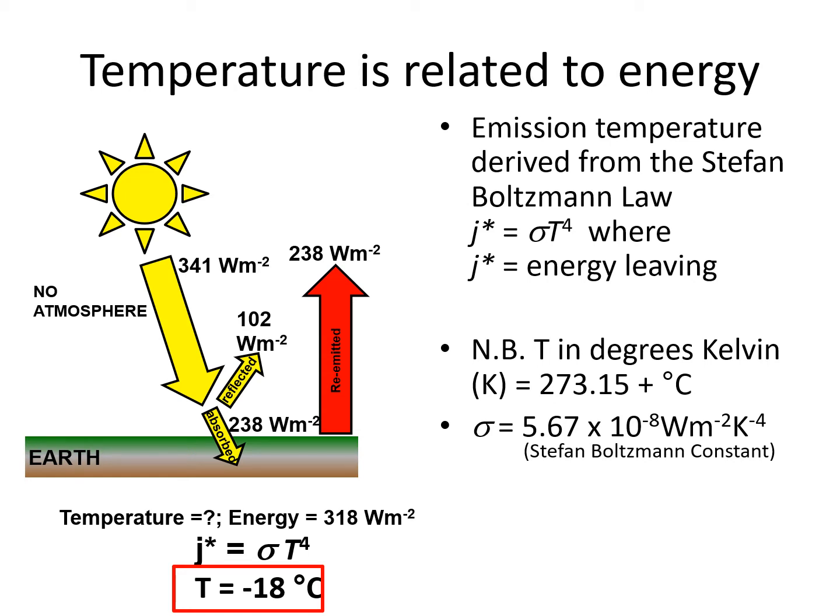Stefan Boltzmann's law says that temperature is related to the fourth root of energy. If we make this calculation, and you can try this yourself, we find the temperature of the Earth should be minus 18 degrees Celsius. Obviously, this is not the case. This is because the Earth has an atmosphere, which traps outgoing energy. We will explore this in much more detail in week 5, when we learn about the greenhouse effect. For now, just remember that temperature is related to energy.